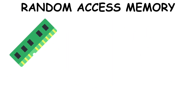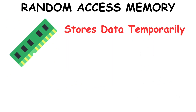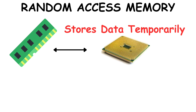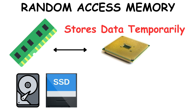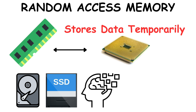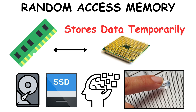Random access memory is a type of computer memory that temporarily stores data and instructions that the processor needs while running applications. Unlike a hard drive or SSD, RAM is volatile memory, meaning it loses its data when the computer is turned off.